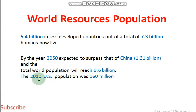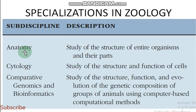The 2010 US population was 160 million. According to chapter number one, there are some disciplines and sub-disciplines of zoology.